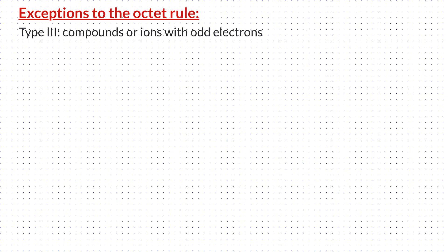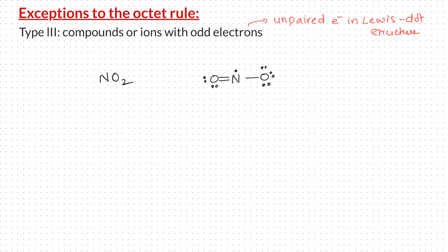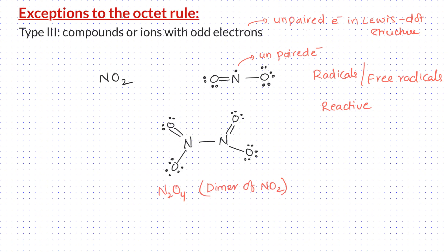Some compounds have an odd number of valence electrons. Therefore, there is an unpaired electron in their Lewis dot structure. For example, NO2 has an unpaired electron in its structure. These kinds of molecules are called radicals or free radicals, and they are extremely reactive. For example, NO2 dimerizes to form N2O4.